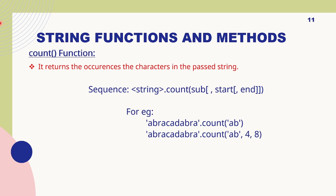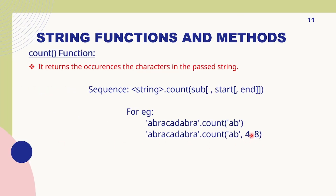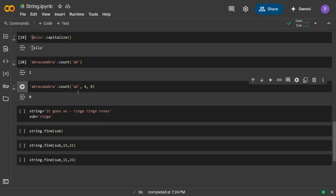The count function counts the number of substrings present in a string. The syntax is: string.count(substring, start, end) — where start and end define the range. For example, 'abracadabra'.count('ab') gives 2, as there are two 'ab's. But if I specify a starting point from the 4th to 8th character to count 'ab', there are none, so it returns 0.